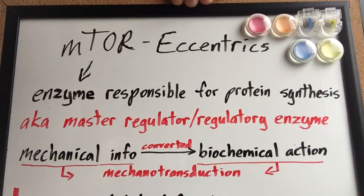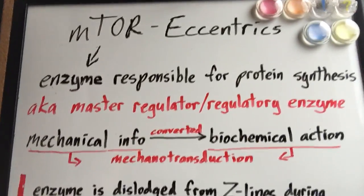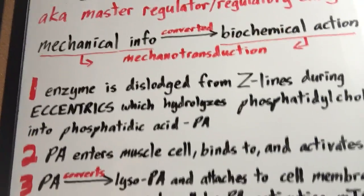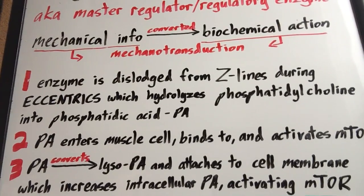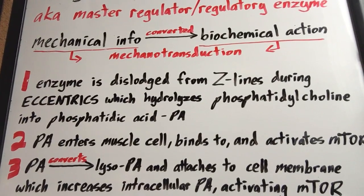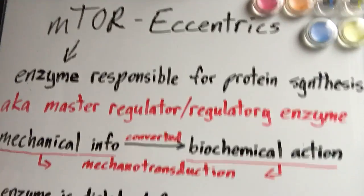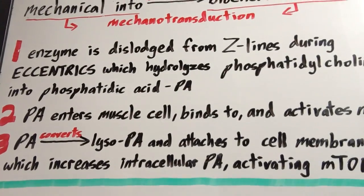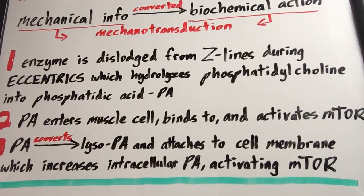What happens when you work out is mechanical information is converted into biochemical action through a process called mechanotransduction. As it relates to this relationship, an enzyme is dislodged from the Z lines of your muscles during eccentrics, which hydrolyzes phosphatidylcholine into phosphatidic acid — which we'll call PA. PA then enters the muscle cell, binds to, and activates mTOR, the enzyme responsible for protein synthesis. PA also converts lysophosphatidic acid and attaches to the cell membrane, which increases intracellular PA, further activating mTOR.